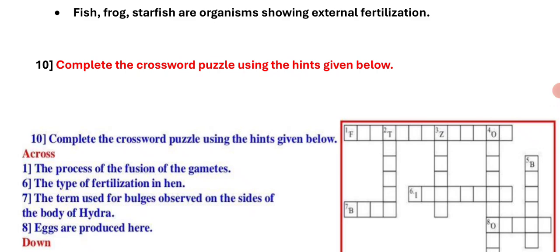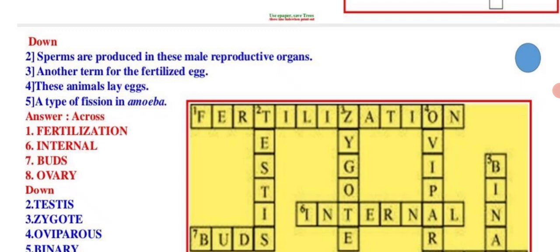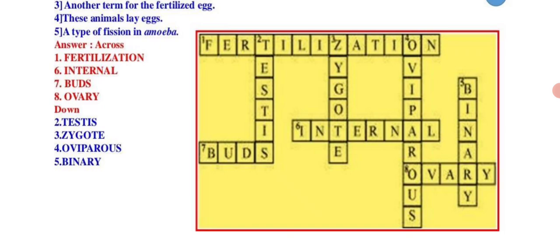Question number 10: Complete the crossword puzzle using the hints given below. Across: the process of fusion of gametes — fertilization; the type of fertilization in humans — internal; the term used for buds observed on the body of hydra — buds; eggs are produced here — ovary. Down: sperms are produced in these male reproductive organs — testes; another term for the fertilized egg — zygote; these animals lay eggs — oviparous; a type of fission in amoeba — binary.